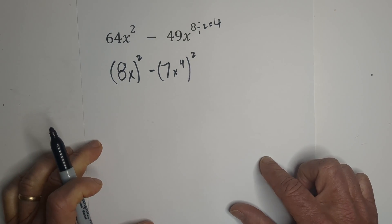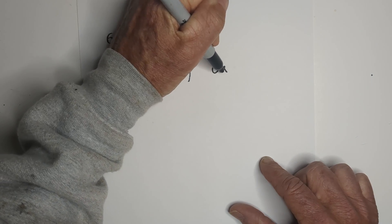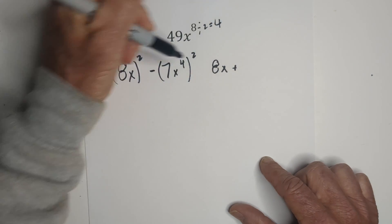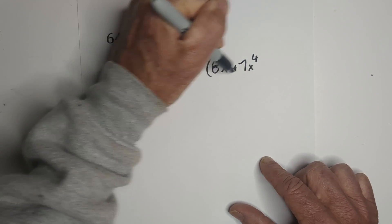And just like in the first example, now we're going to rewrite it. We're going to go a, which is 8x, plus b, which is 7x to the 4th, times—